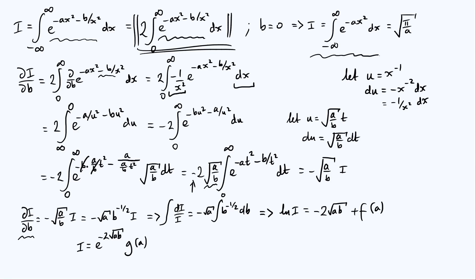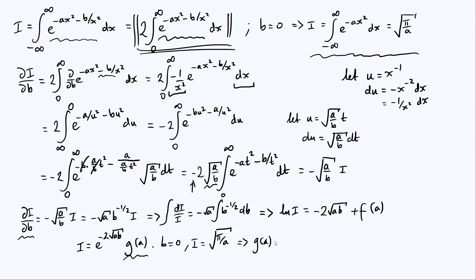Here we use the standard Gaussian integral as our boundary condition. We know that when b equals zero, I equals the square root of pi over a. Plugging b equals zero into our expression, e to the minus two root(ab) becomes e to the zero, which is one. So we find that g(a) equals the square root of pi over a. Substituting back, we arrive at our result: I equals e to the minus two root(ab) times the square root of pi over a.